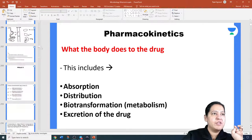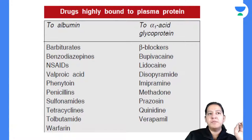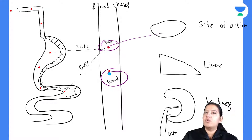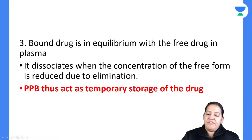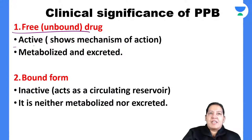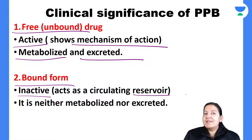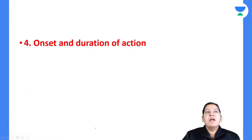The free form is not bound to plasma protein — it is active. It will go to the site of action and show mechanism of action. It will go to the liver, show metabolism, convert from non-polar to polar, and go to the kidney and get excreted. The bound form will remain in the blood only, acting as a reservoir. It is neither metabolized nor excreted and does not show mechanism of action.